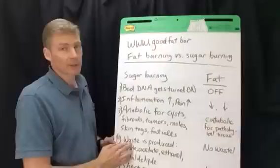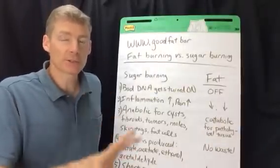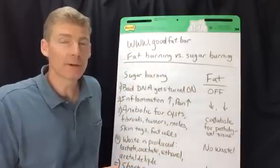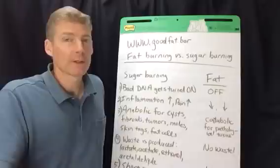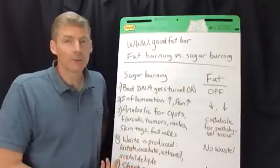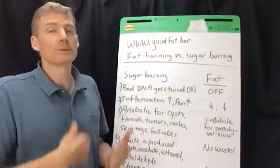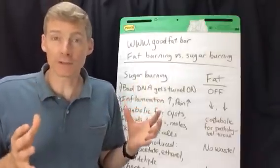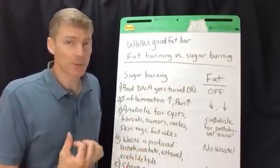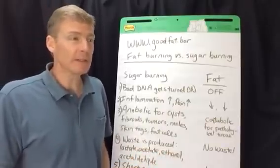Number four: burning sugar creates waste. There's a cycle called the lactic acid cycle where cells burn sugar, waste is created, the waste has to be cleaned up by the liver, and then the liver makes more sugar — so it's a cycle. The waste produced includes lactate, most of which is turned back into fuel but not all of it, and whatever remains in the blood messes with the arteries. Another waste product is acetate — that's nail polish remover, that's a poison.